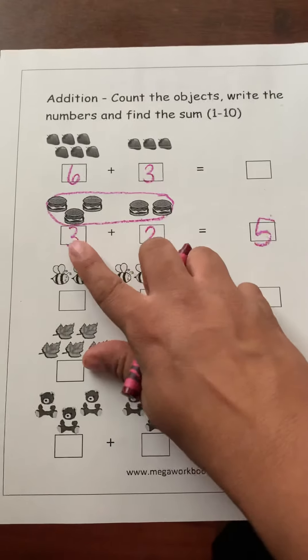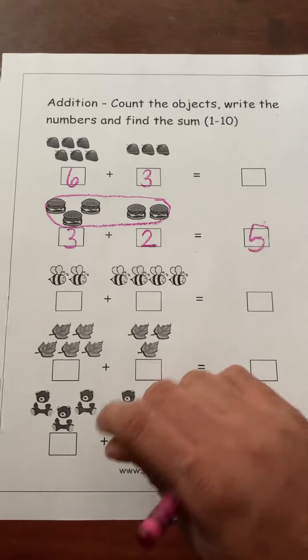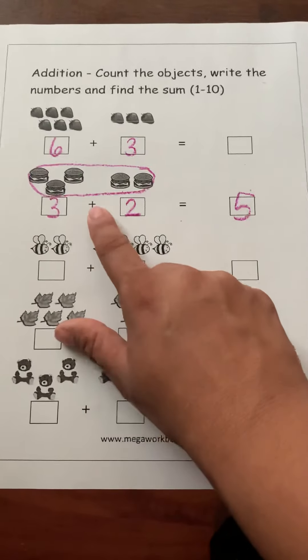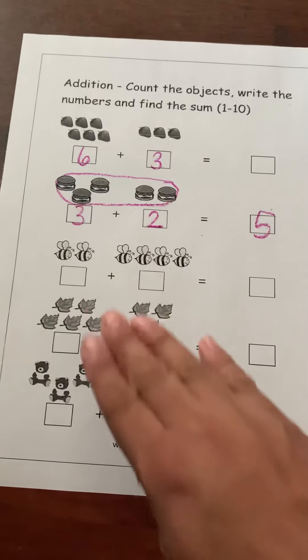And then you're going to let them know three plus two equals five. And then we just want to let them know that this means that we're counting all together. So they're just going to keep doing that all the way down.